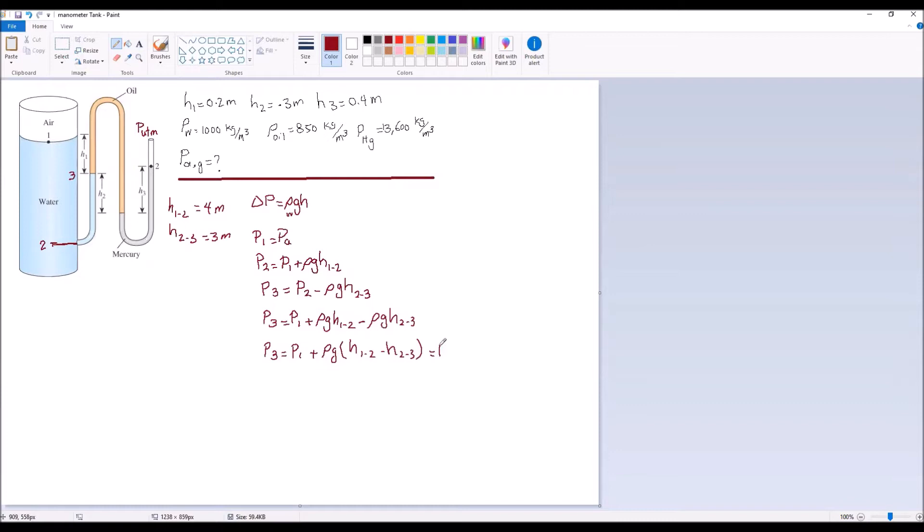So this is equal to P3. So this is equal to P1 plus rho GH 1 to 3. 2 to 2, we cancel out, moving up to 2 to 3 because this is a positive, this is negative. So we have to just consider this height, H from this level to this level.